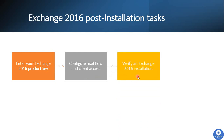Next, we have to verify the Exchange 2016 installation. There are multiple ways to verify that Exchange 2016 is correctly installed. We can run the Get-ExchangeServer command in the Exchange Management Shell and check the output for the build version to verify the correct cumulative update is installed. We can also verify that all Microsoft Exchange related services are in a running state and all server components are in an active state. We can open the Exchange setup log to review the installation logs, and we can send and receive a test email to confirm that email flow is working.